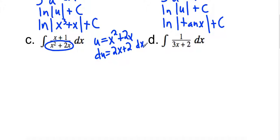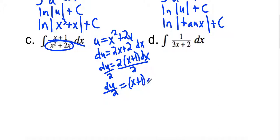Now I don't have 2x plus 2, I have x plus 1. But if I take this and factor out a 2, now I've got that x plus 1 dx. So all I need to do is divide by 2, move that 2 over. So I get du over 2 is equal to x plus 1 dx.